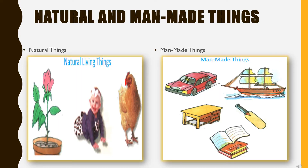Now I will tell you about natural and man-made things. Our world is made up of natural and man-made things. See here — this is a plant, a small baby, a hen. These all are natural things. Car, table, ship, bat, book, notebook — these all are man-made things.